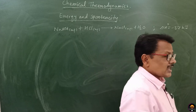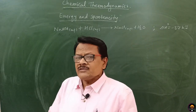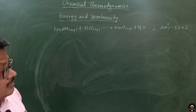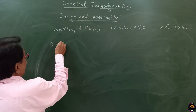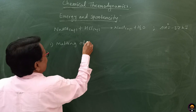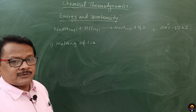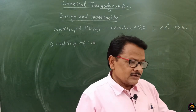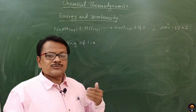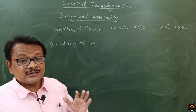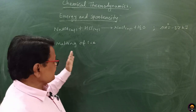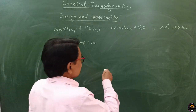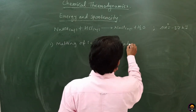But this doesn't happen every time. Consider the example of melting of ice: when ice is taken out and kept open in the atmosphere, it melts, but during this melting process it absorbs heat. The process is spontaneous but it occurs by absorbing heat — it is an endothermic process.